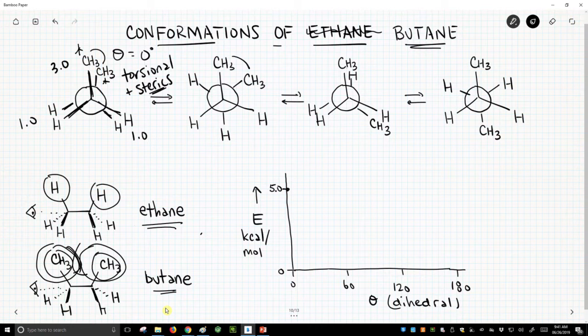As we open up our dihedral angle between these two methyl groups to 60 degrees, we alleviate all the torsional strain, but we still get these methyl groups. They're still big enough to bang into each other a little bit next door, and that actually has more steric strain.